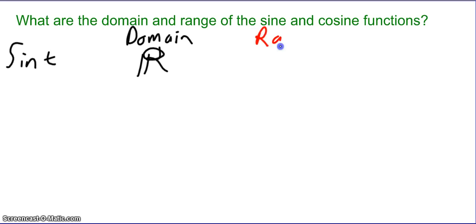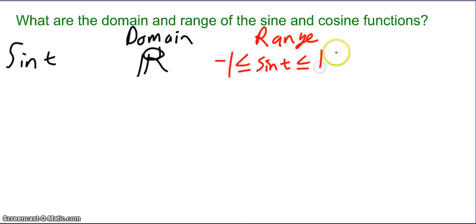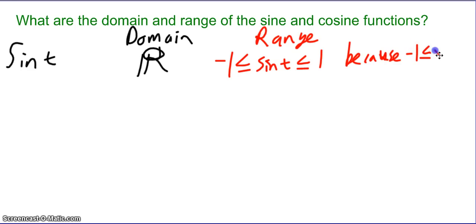The range of sine — what are the possible output values? Remember, sine gives the y values on the unit circle. The largest y value is positive 1 and the smallest is negative 1. So the range is going to be negative 1 to 1, including negative 1 and 1, because those are the lowest and highest y values on the unit circle.